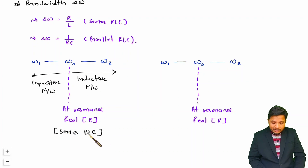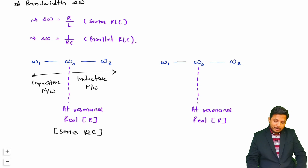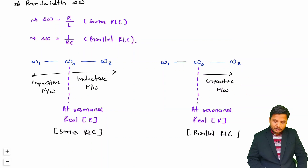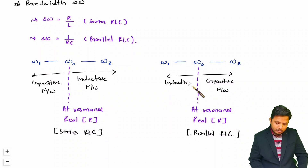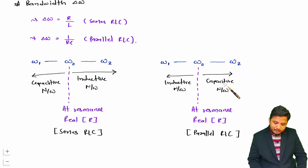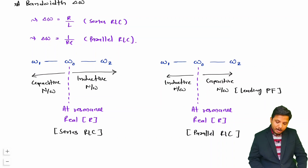This type of question often appears in competitive examinations. For parallel RLC connection, when the frequency is greater than omega 0, you will have a capacitive circuit, and when the frequency is lower than omega 0, you will have an inductive network — which is the opposite of the series case. A leading power factor corresponds to a capacitive network, and a lagging power factor corresponds to an inductive network.